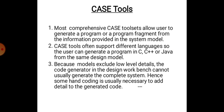Because models exclude low-level details, the code generator in the design workbench cannot usually generate the complete system. Hence, some hand coding is usually necessary to add details to the generated code. Since models are just abstract and do not give all details, it is difficult for the code generator to generate a complete program, so a human being has to write some part of the code.